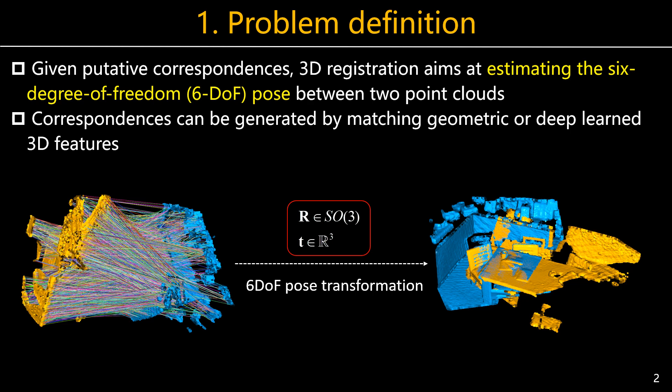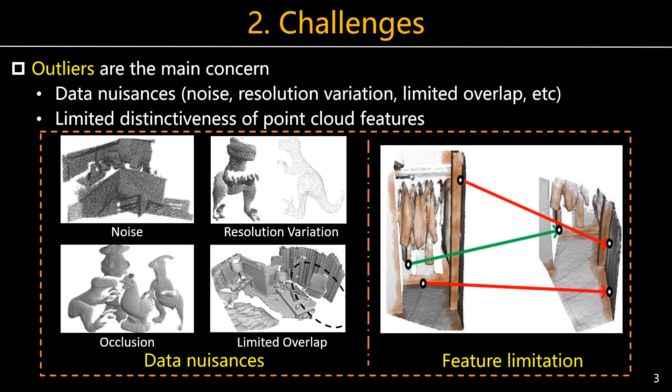Here, we focus on estimating an accurate transformation from correspondences with outliers to perform registration. Outliers are the main challenge to this problem — they arise from nuisances such as noise and limited overlap, resulting in heavy outlier ratios. In addition, current feature descriptors still hold limited discriminative power, which can further generate outliers.